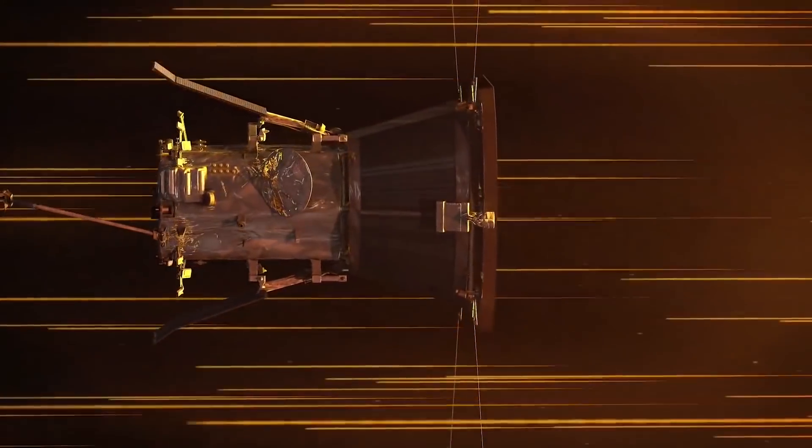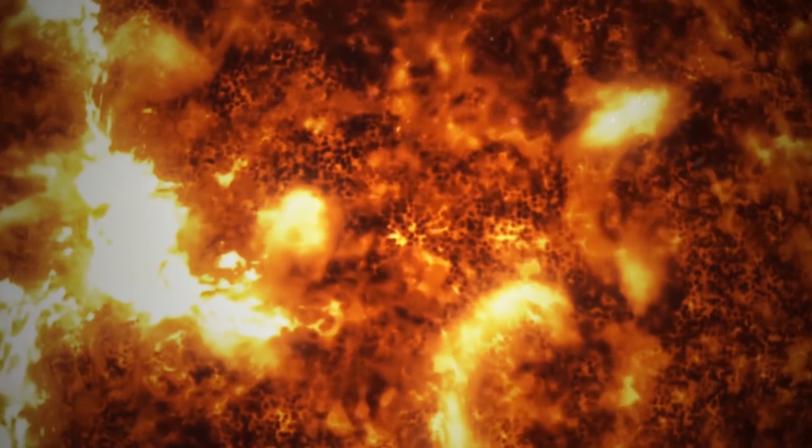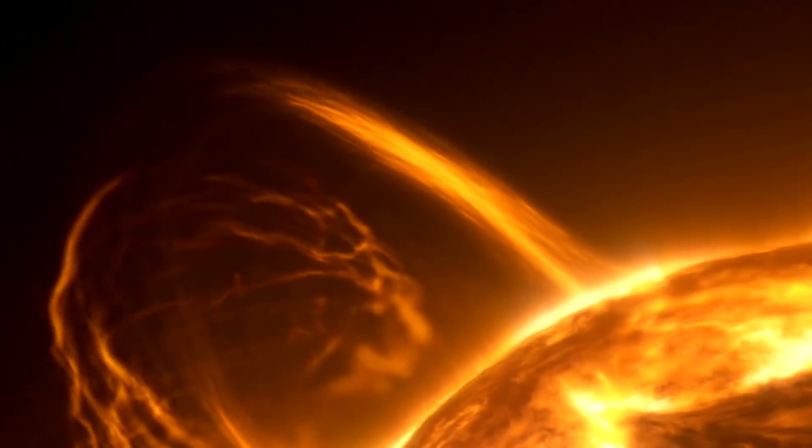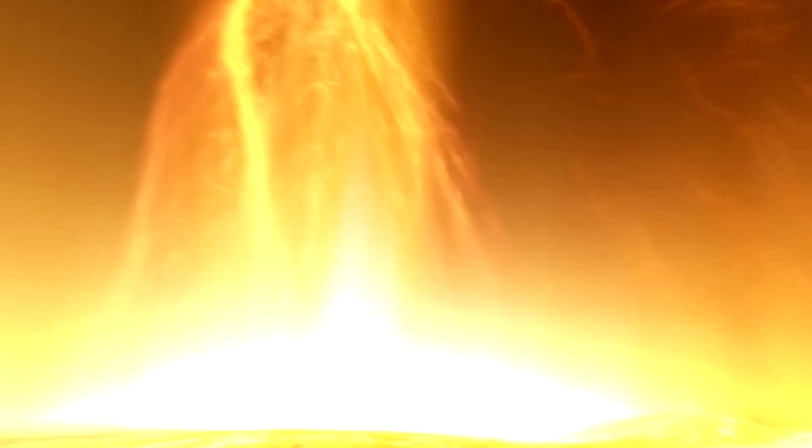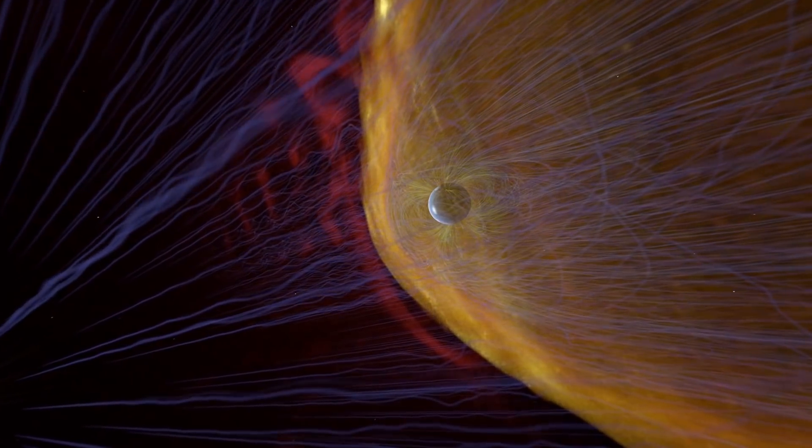The Sun, unlike Earth, lacks a solid surface, but it does have a superheated atmosphere made up of material held together by gravity and magnetic forces. As that material is pushed away from the Sun by increased heat and pressure, gravitational forces and magnetic fields become insufficient to retain it. The Alfven critical surface marks the solar atmosphere's end and the solar wind's start.